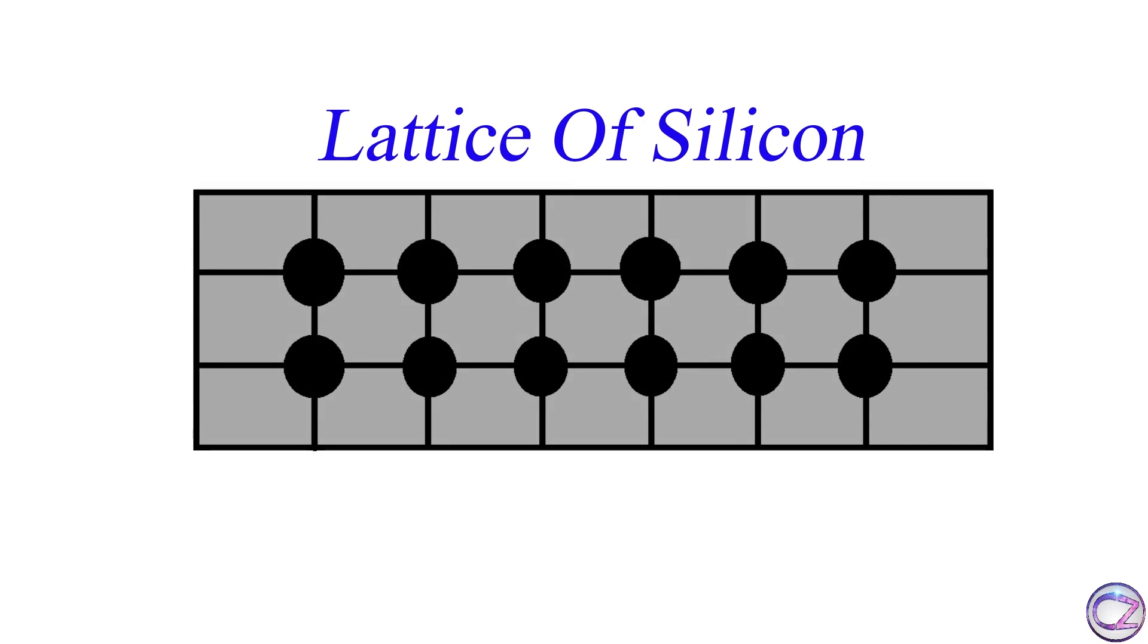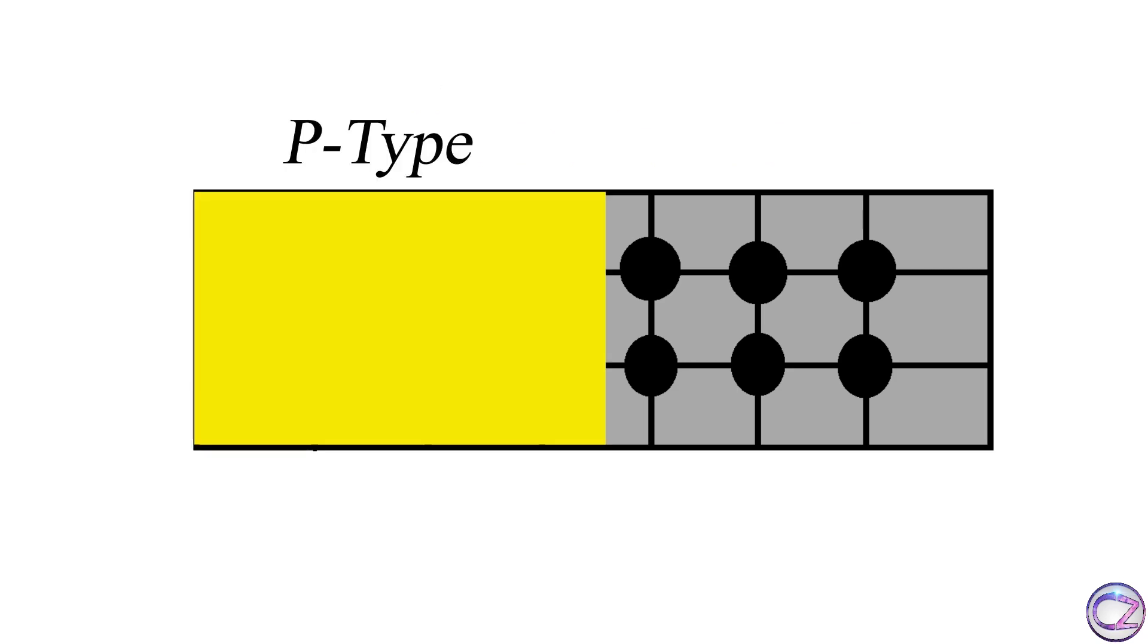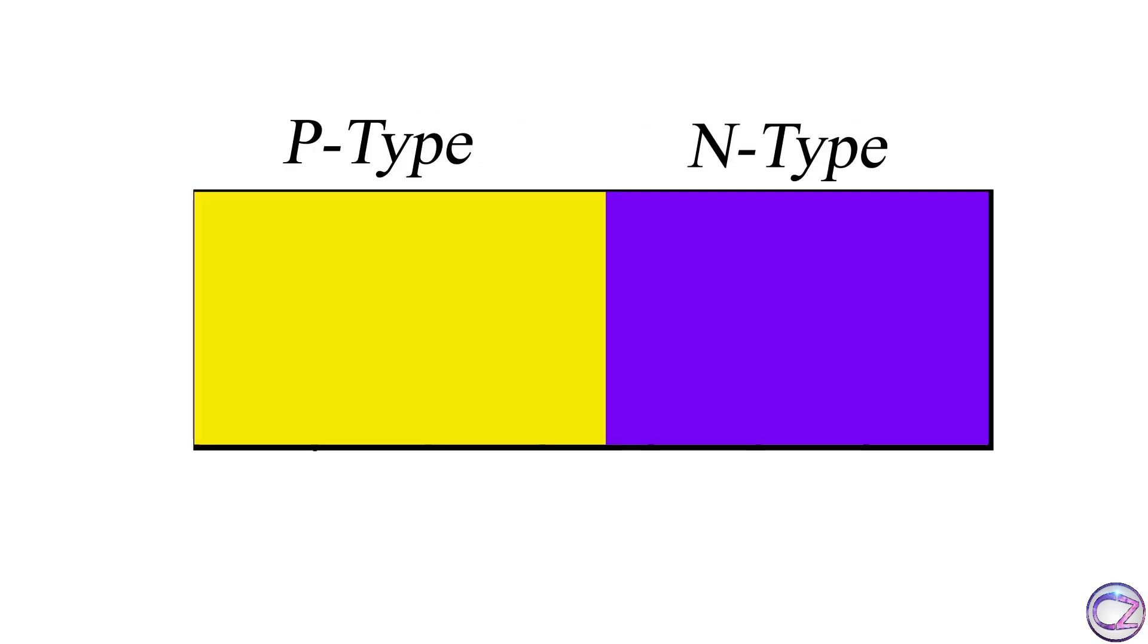Question is, what type of impurities? N-type or P-type? Actually, a diode is made with both types of impurities. One side is doped with P-type and the other side is doped with N-type impurities.